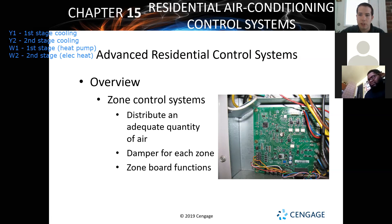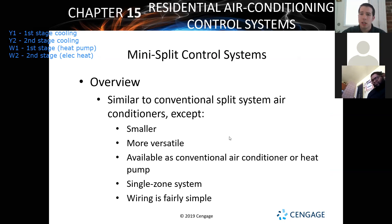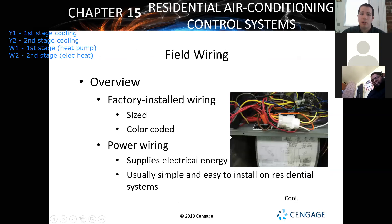Mini split controls are super simple — typically just a remote control on the wall. It's a really complicated control board but doesn't take a lot to diagnose; it usually has a lot of error codes and the manufacturer gives you a lot of information. For field wiring, you've got two different kinds: field wiring and factory wiring.